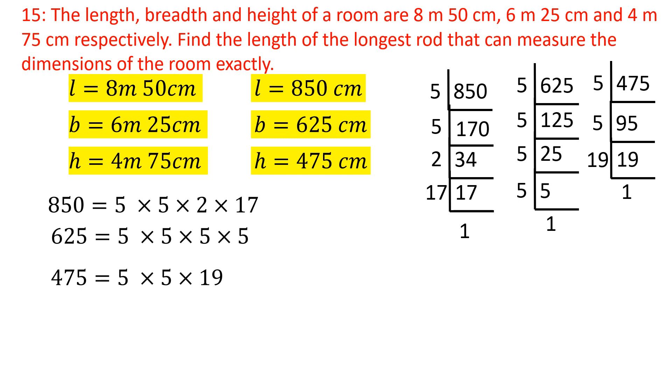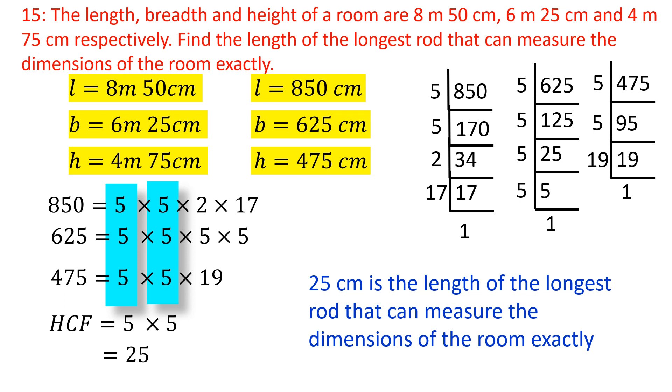We have to find the HCF of L, B and H. The common factors are 5 and 5. HCF value is 5 × 5 = 25. Therefore, 25 cm is the length of the longest rod that can measure the dimensions of the room exactly. This is the answer.